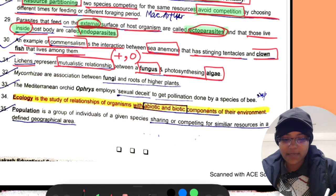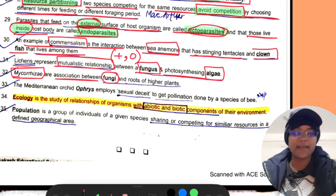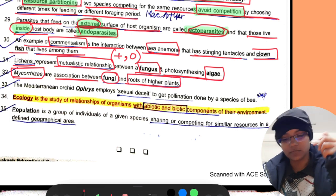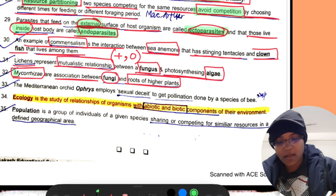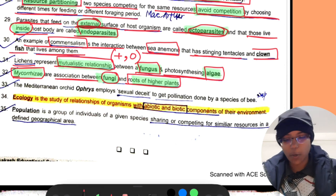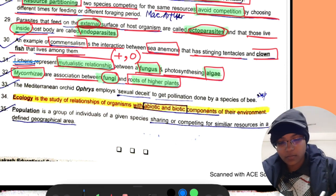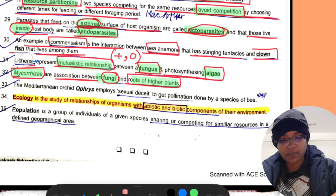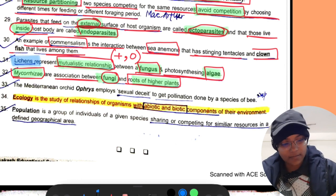Lichens represent mutual relationship between fungus and a photosynthetic algae. Mycorrhiza is association between fungi and the roots of higher plants like gymnosperms.